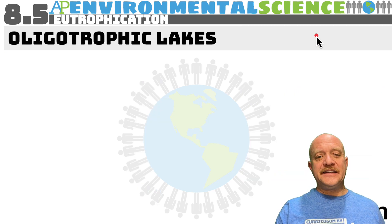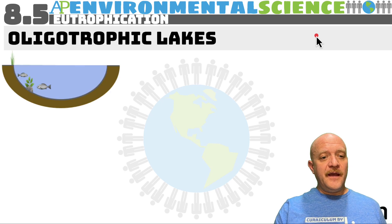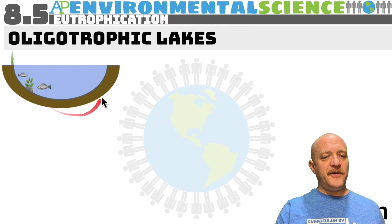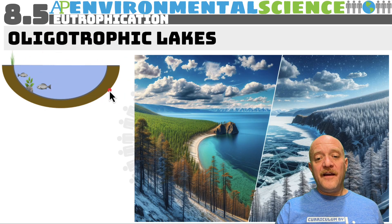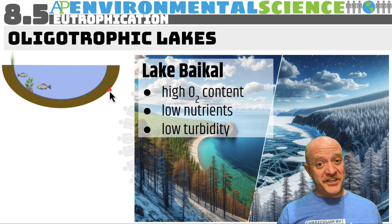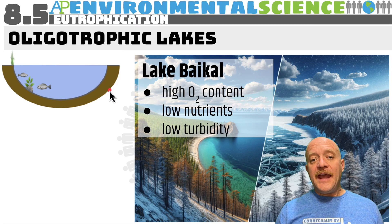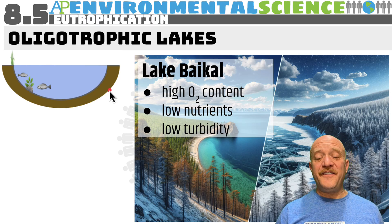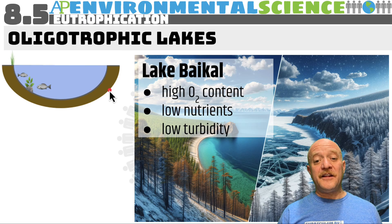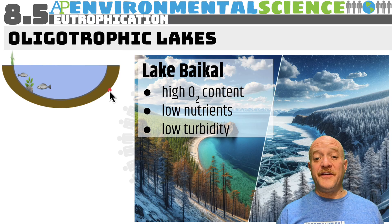Before talking about cultural eutrophication, we'll cover the different types of trophic lakes. First is oligotrophic — you can see there are very few living things, very few biotic organisms. An example is Lake Baikal in Russia, which has an incredibly high oxygen content, low nutrients, and low turbidity. Because there are low nutrients, there cannot be many plants, and as a result there are not many fish either.